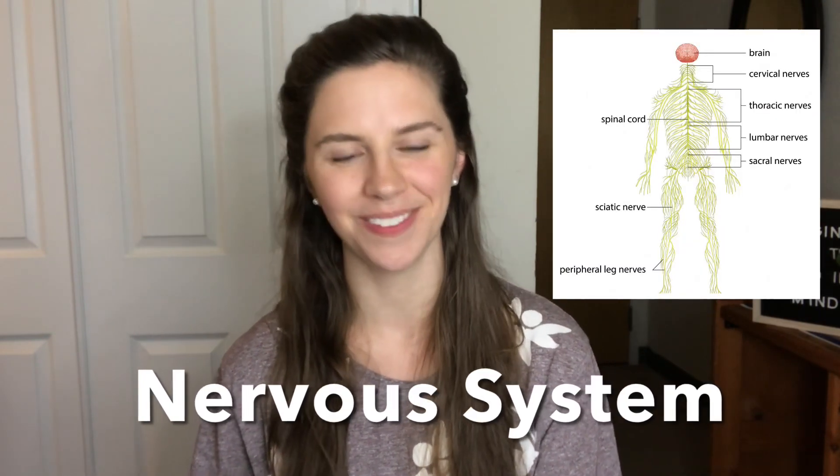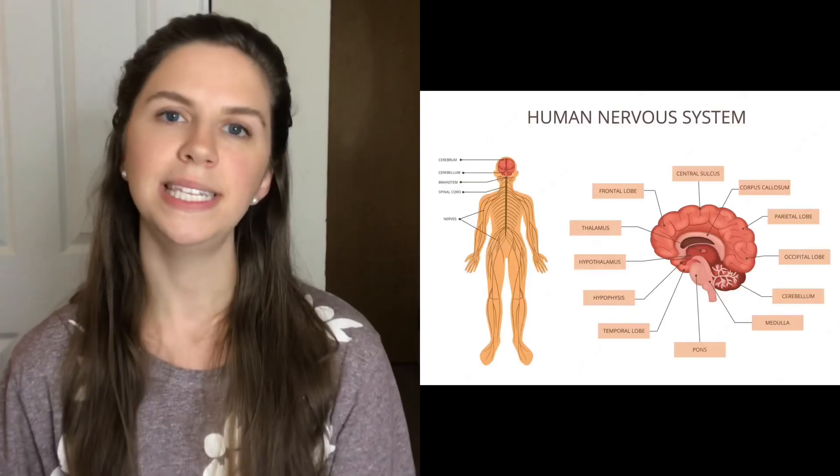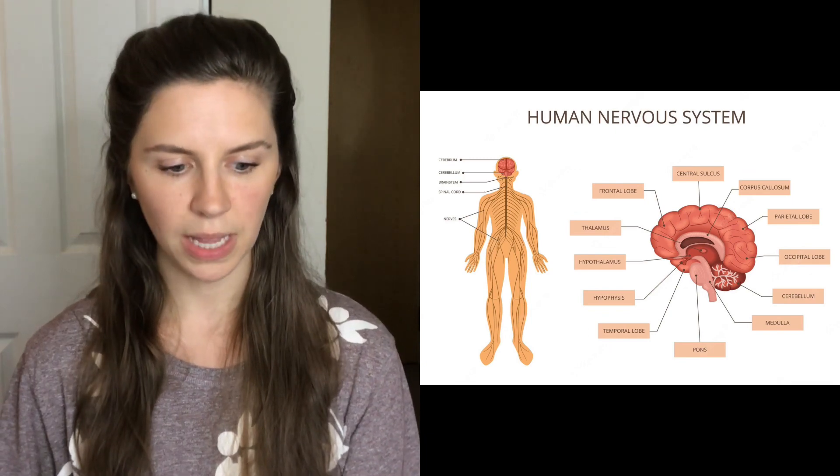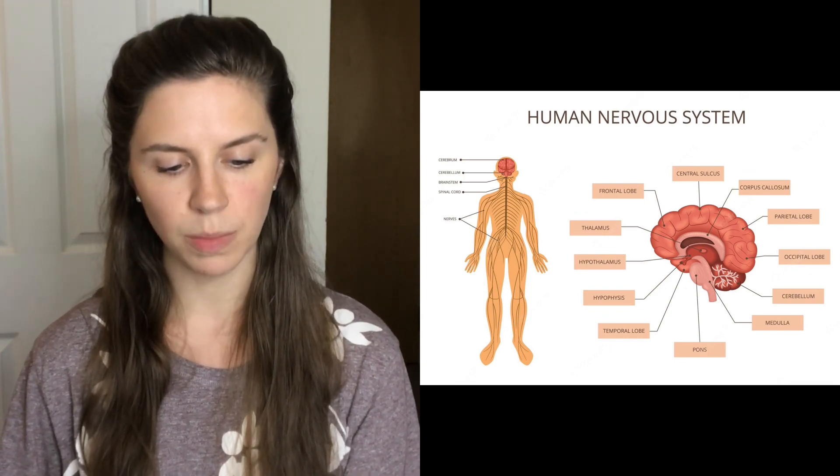Now let's move on to the nervous system. The nervous system is divided into two parts: the central nervous system (CNS) and the peripheral nervous system (PNS). Make sure that you know what both of those are and what their function is. Study the key parts of the brain: the cerebellum, the cerebrum, and the medulla oblongata. And study the cranial nerves — you'll want to know those, including the olfactory nerve, the optic nerve, and the vagus nerve — and what their function is.